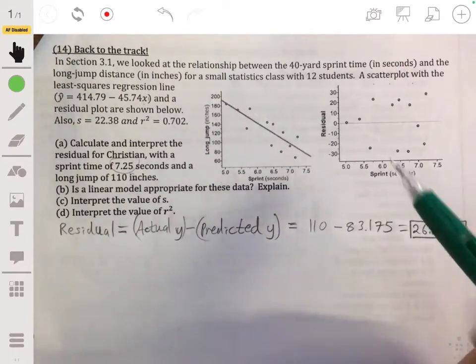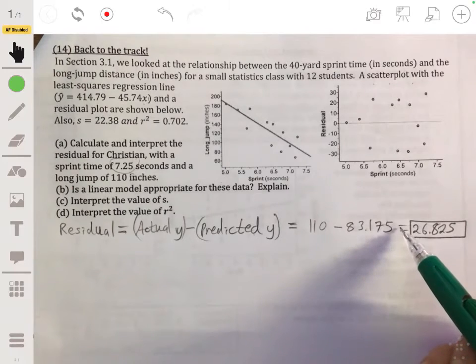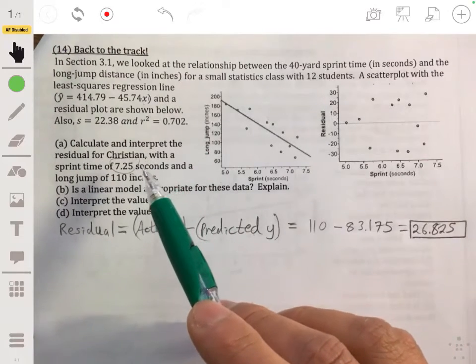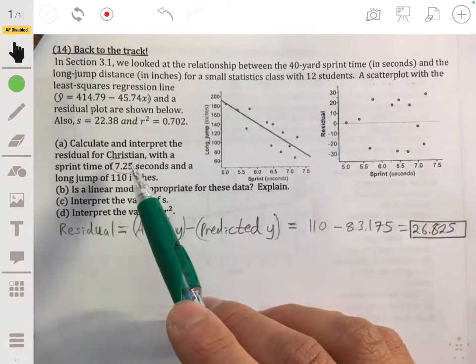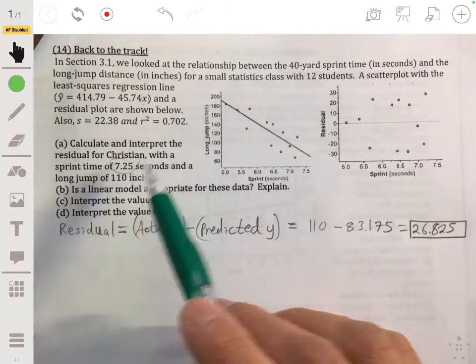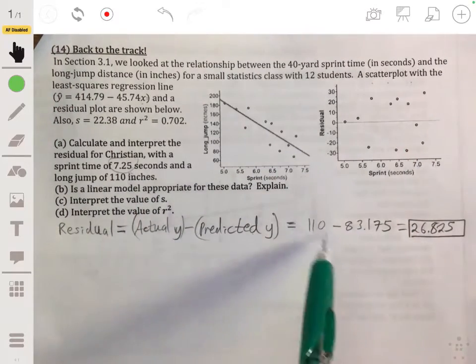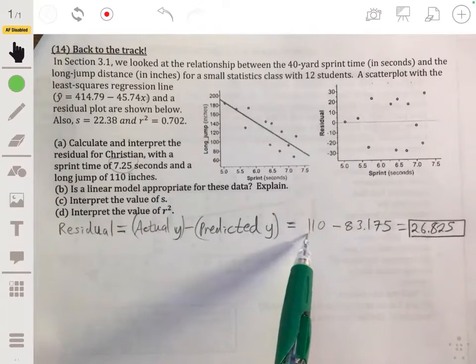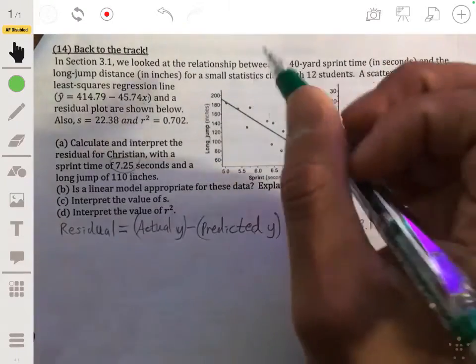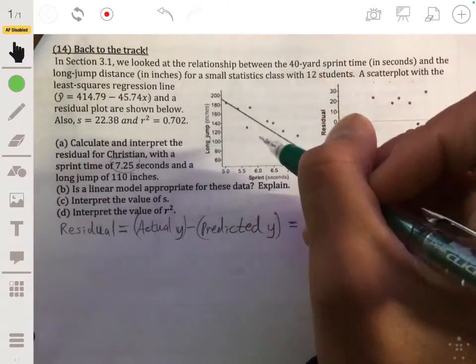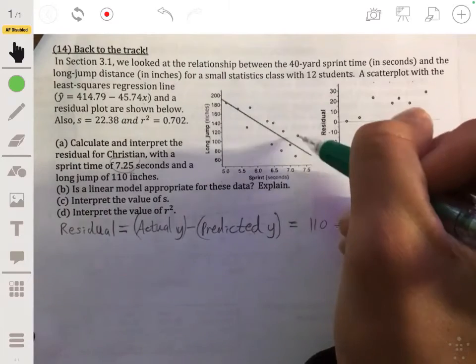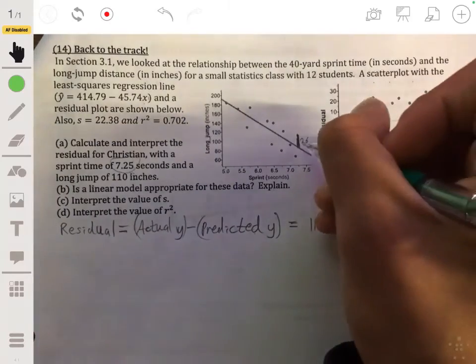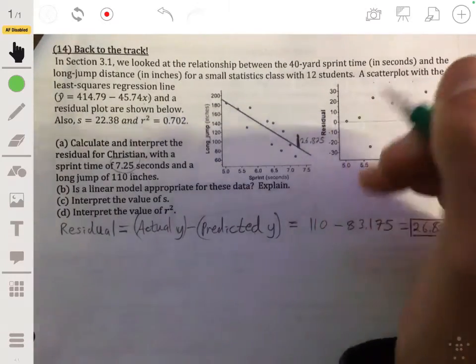Now what does that mean in context? Well, this tells you how off the prediction was. In other words, when we use this equation to predict how long someone with a 7.25 sprint time would long jump, we would predict that they would have a long jump that was 83.175, and the actual one was 110. So if we actually draw this on the scatter plot, if you look, it'll be this guy over here that has a residual of 26.825, that distance.